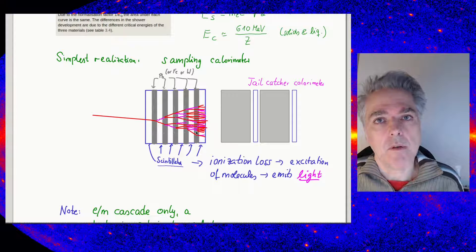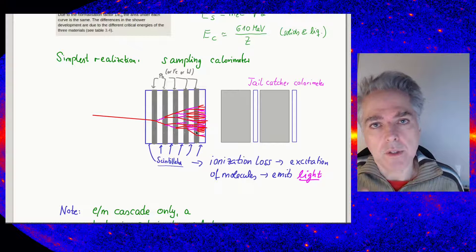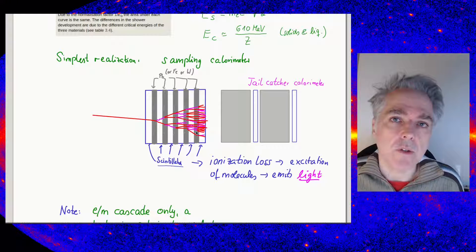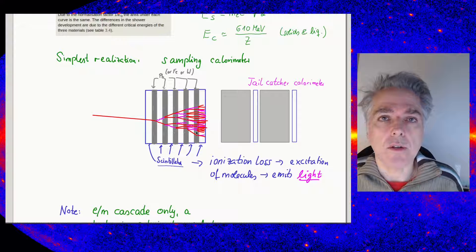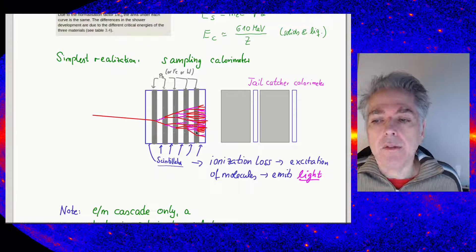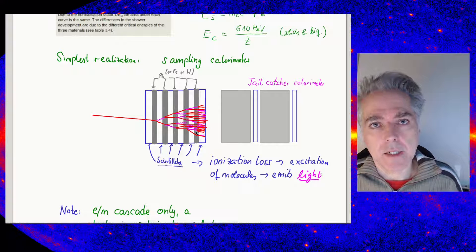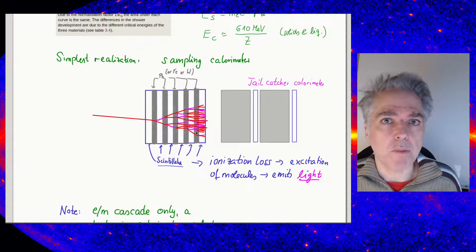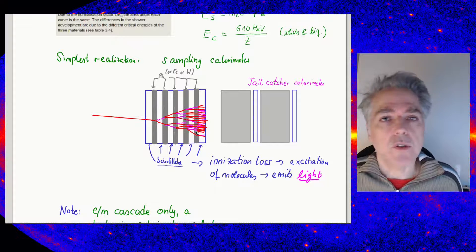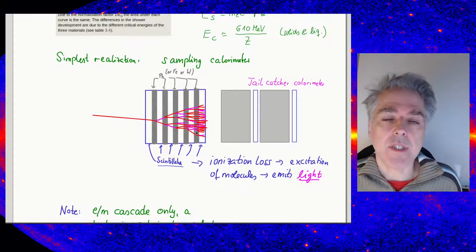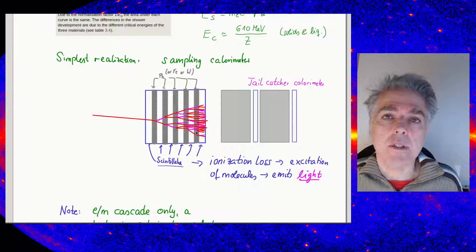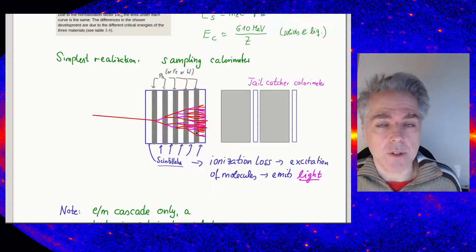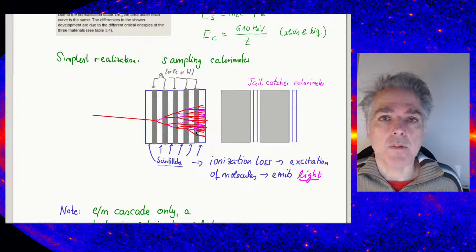A sampling calorimeter building block is about the size of a Molière radius and consists of layers of scintillating material interleaved with, for example, lead layers of about half a centimeter — roughly one radiation length. The scintillator measures charged particles passing through; the amount of light is proportional to particle number, allowing energy reconstruction. A tailcatcher calorimeter with larger conversion blocks and fewer scintillating layers catches any leakage.